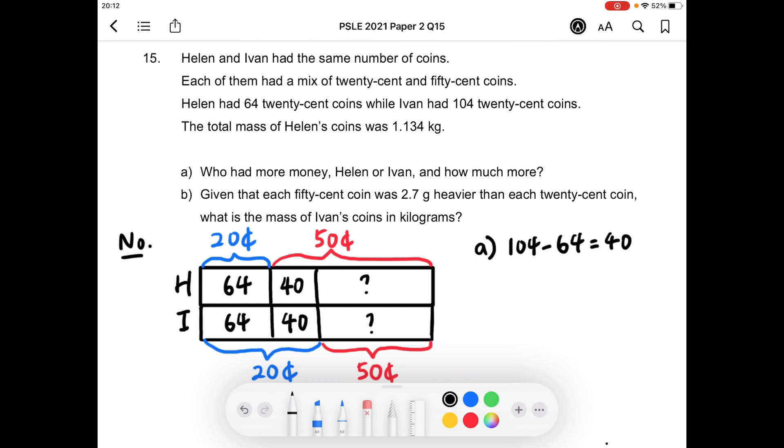Part A, who had more money, Helen or Ivan, and how much more?